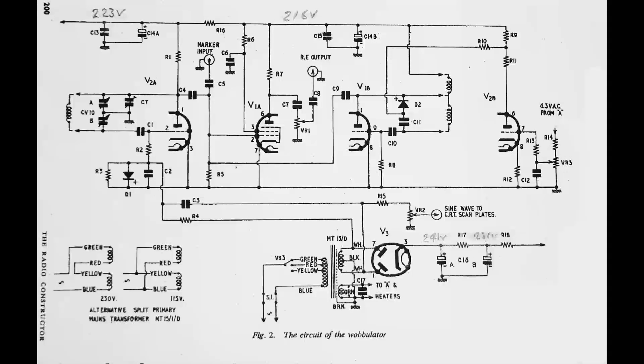This is the circuit diagram of the Wobulator as printed in the magazine The Radio Constructor, and normally I expect to be able to read a circuit from left to right. As I look at this it becomes apparent that it almost wants to start on the right, then work over to the middle and then to the left, and I just find it a little bit confusing, so I've redrawn the circuit diagram.